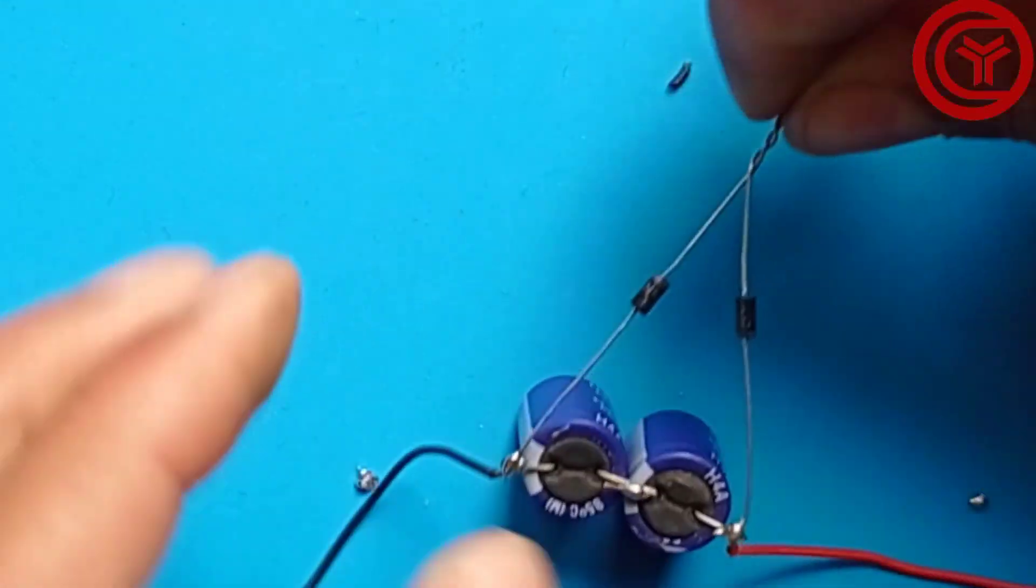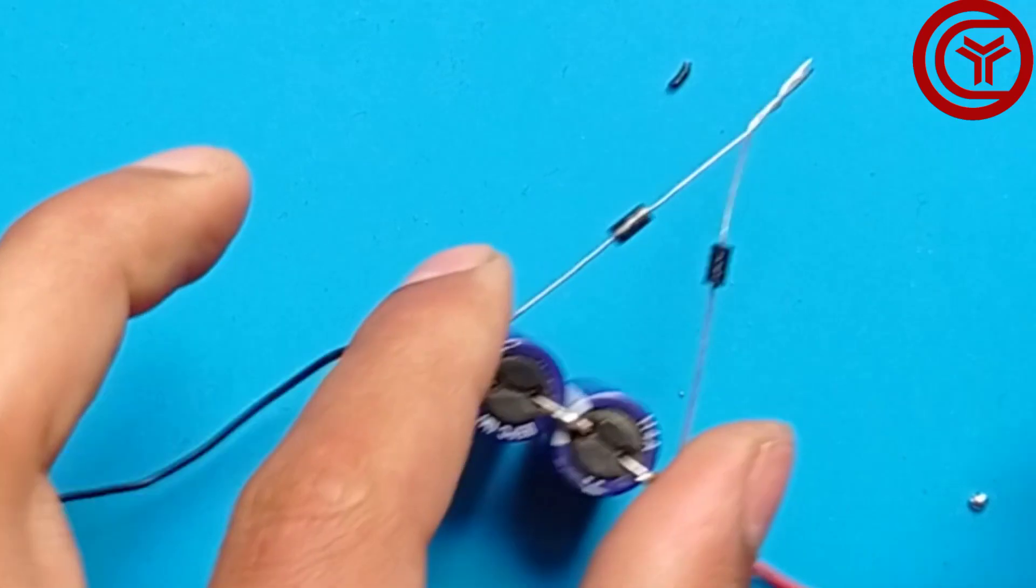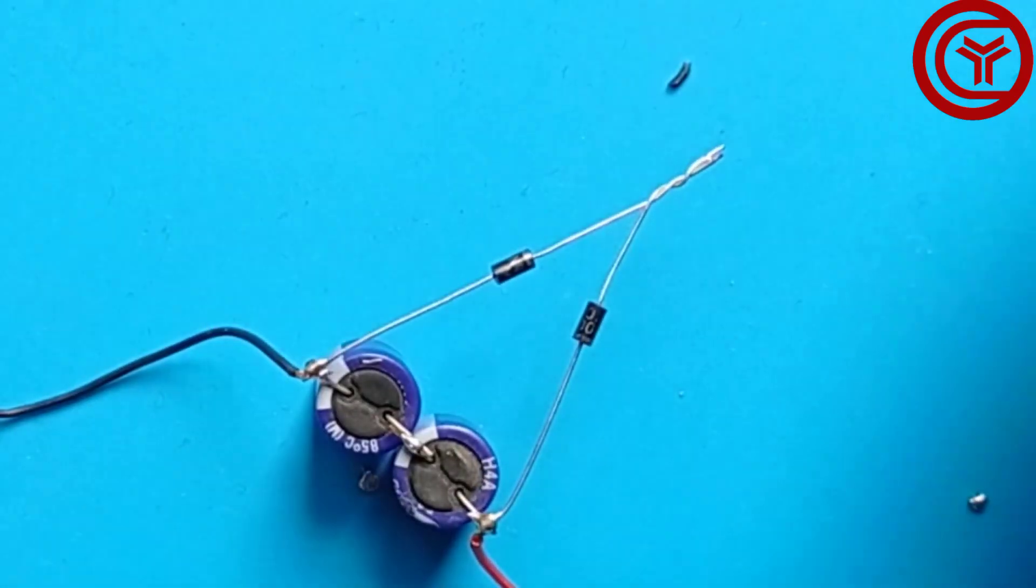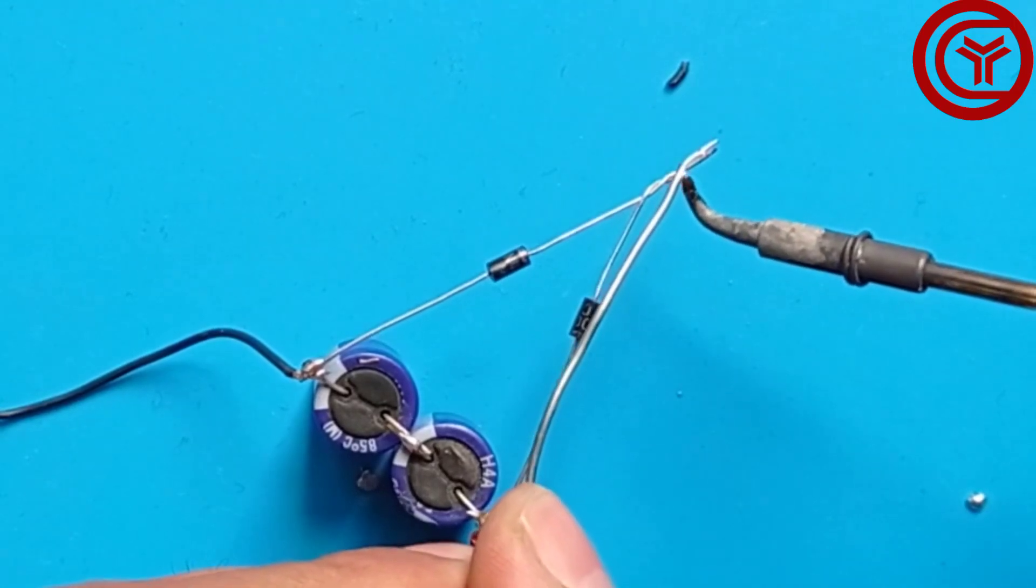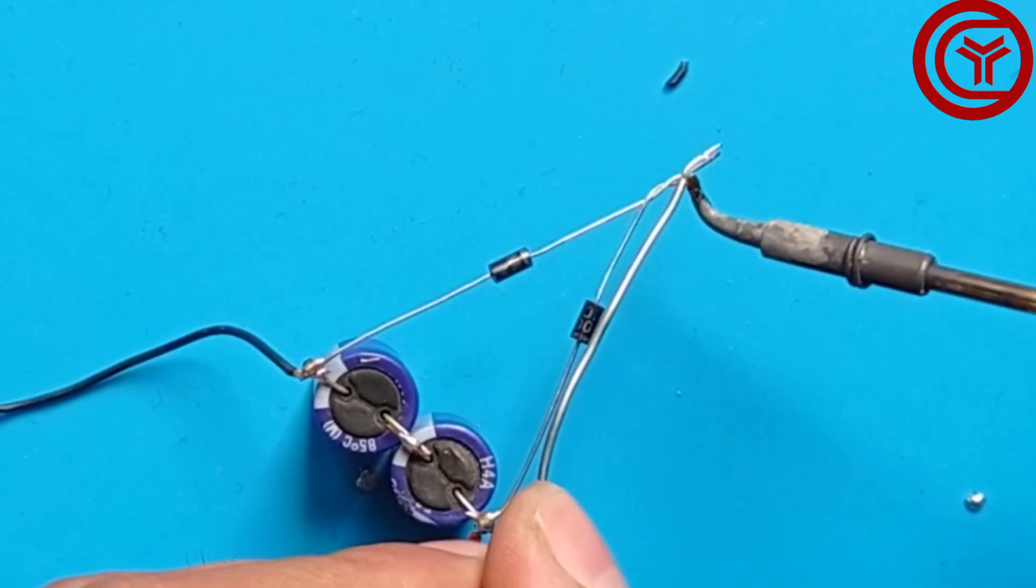This point and the middle point of these two capacitors will be the input for the power source, and we'll solder these two ends of the diodes.